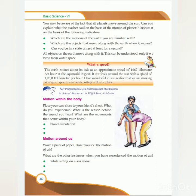Now we will check how the Earth rotates and revolves. The Earth rotates about its axis at an approximate speed of 1667 km per hour at the equatorial region. And it revolves around the sun at the speed of 16,000 km per hour.